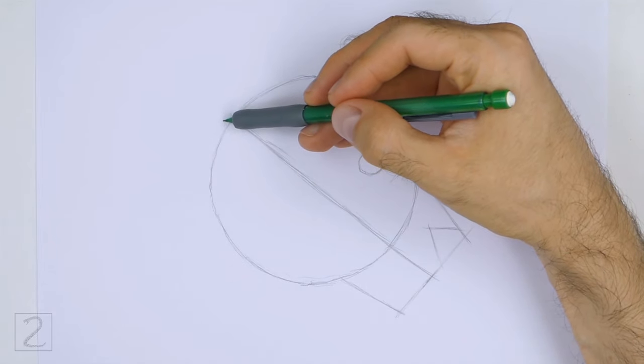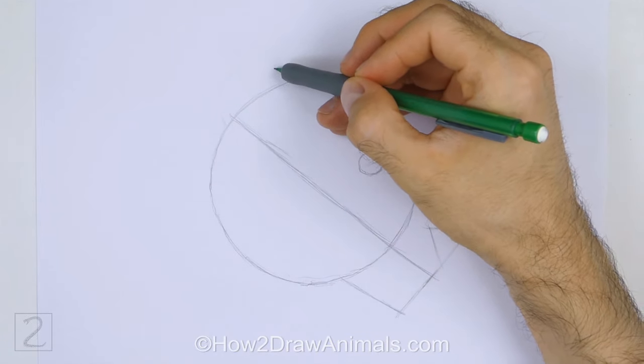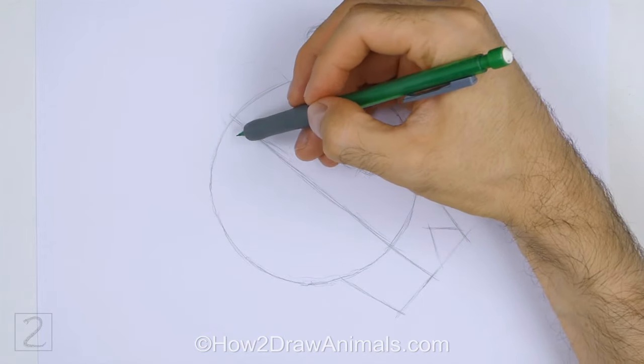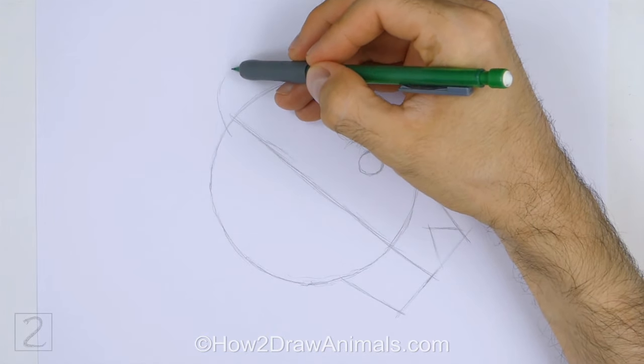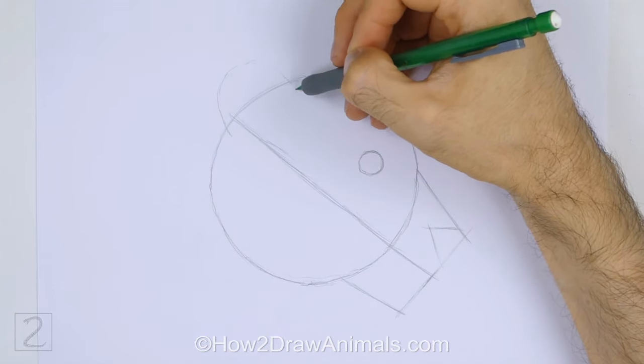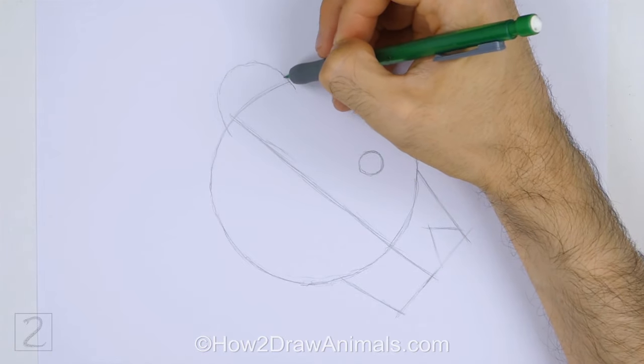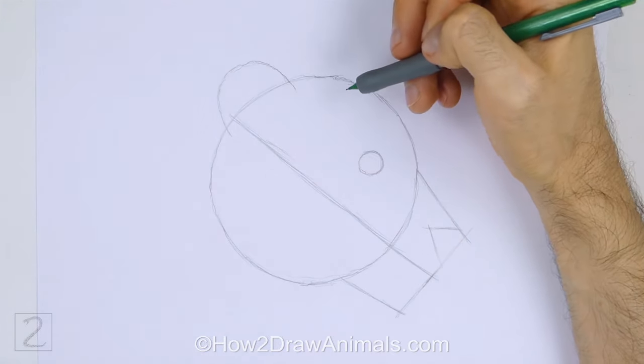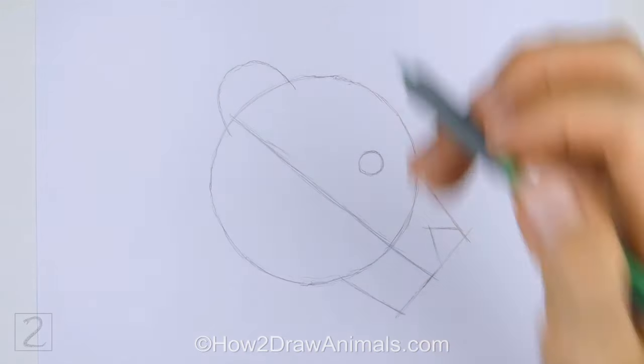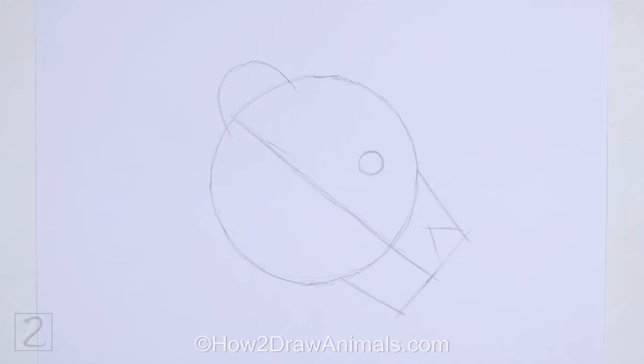On the top left side of the head, draw a curved line as a guide for the ear. This guide should be similar to an arc. The ear should be big in relation to the head. And that's it for the guidelines. Now let's start on the final drawing.